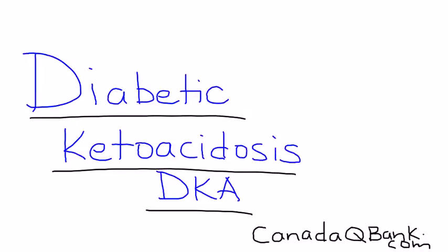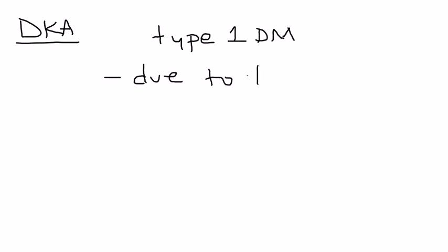Diabetic ketoacidosis, or DKA, is what we will discuss. DKA is a very serious consequence that occurs in type 1 diabetes mellitus, and it's basically due to the fact that you have very inadequate insulin levels.